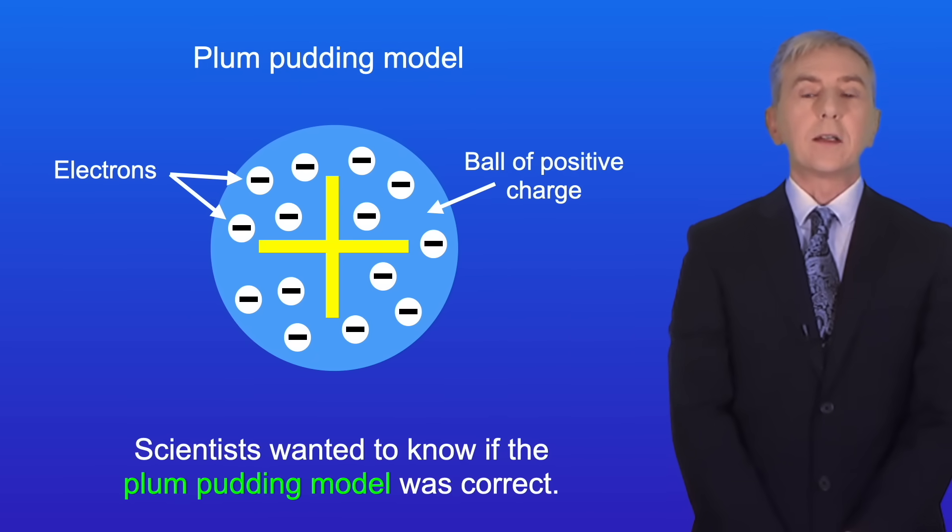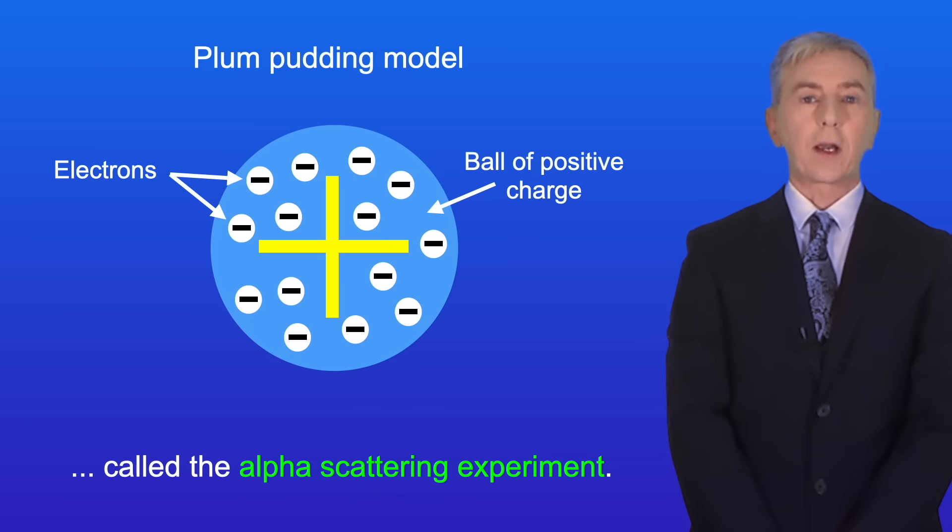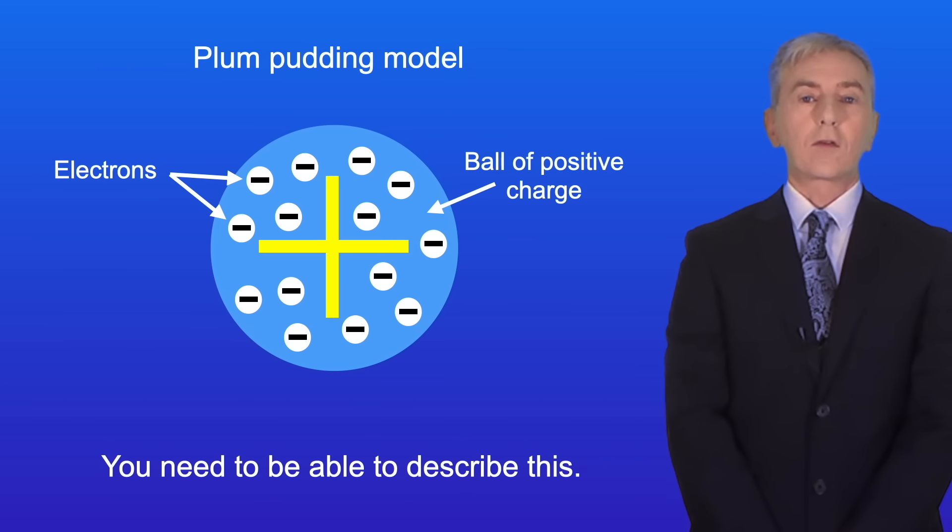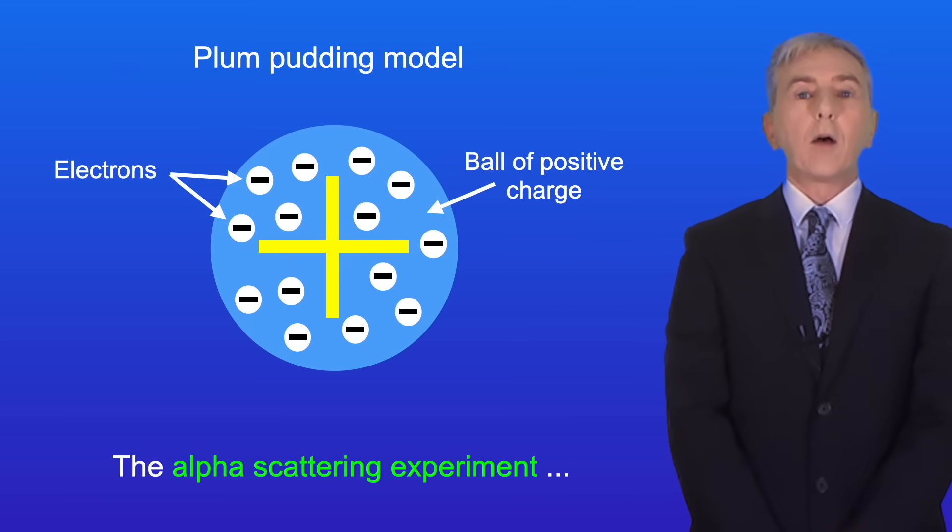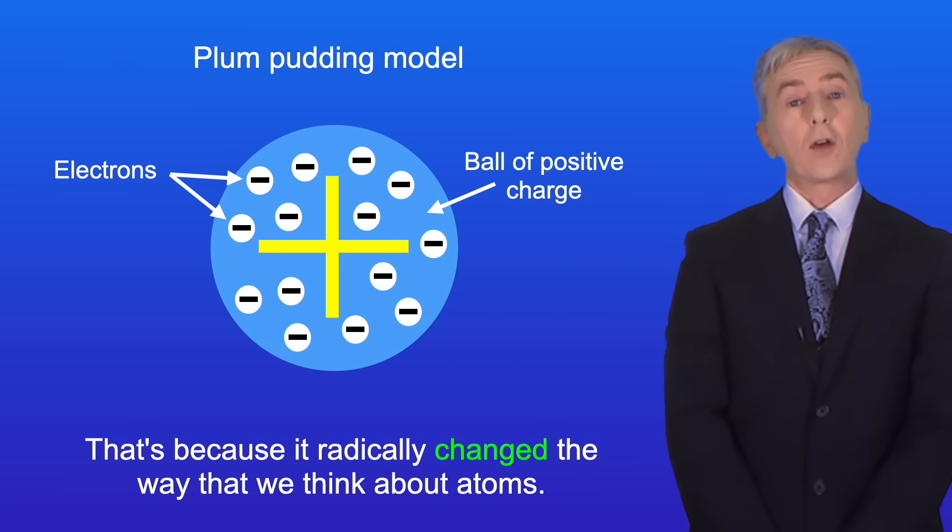Now scientists wanted to know if the plum pudding model was correct. To find out they carried out an experiment called the alpha scattering experiment and you need to be able to describe this. Now the alpha scattering experiment is one of the most important experiments in science and that's because it radically changed the way that we think about atoms.